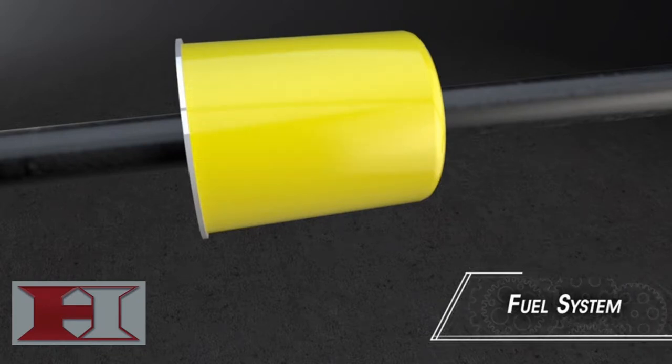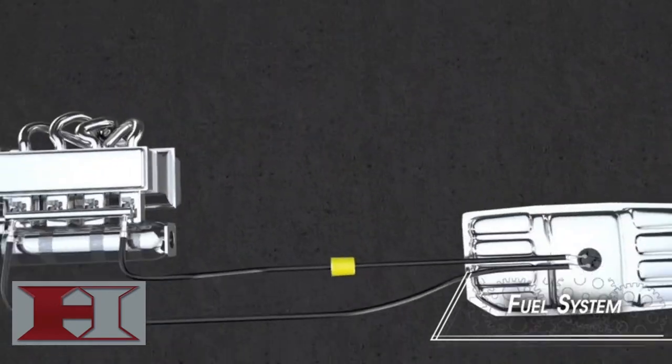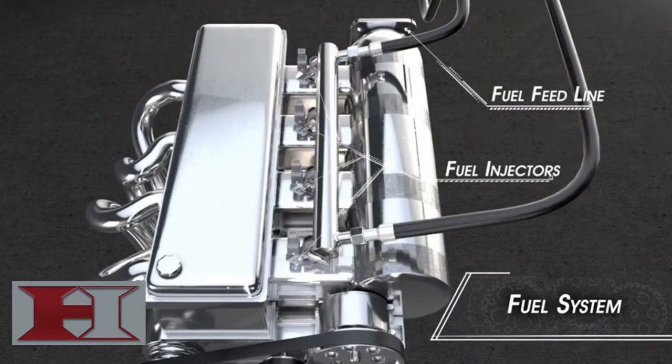A fuel feed line runs to the fuel rail on the engine, where it is atomized in the combustion chamber of each cylinder by fuel injectors.